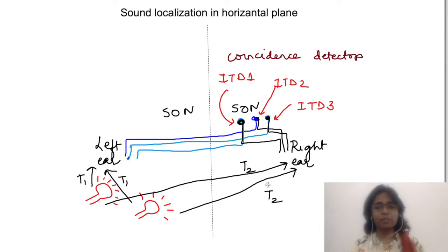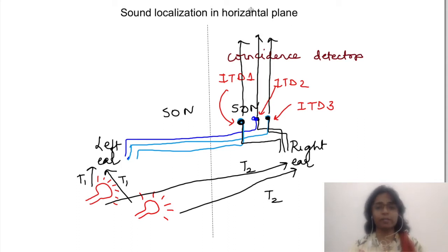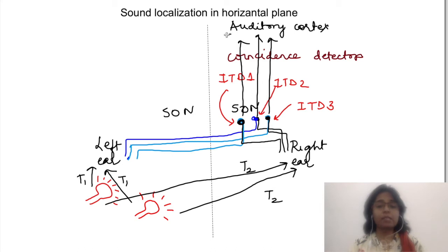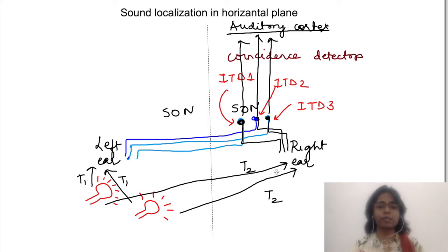This representation of time difference travels up to the cortex, so there are representations of time difference in the cortex as well. That is how we differentiate between sounds in the horizontal plane — whether they are coming from the left or right side.